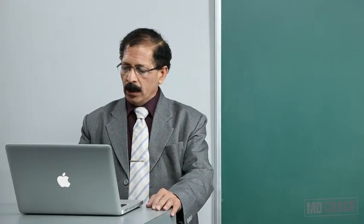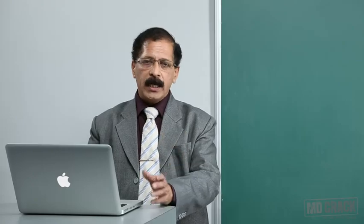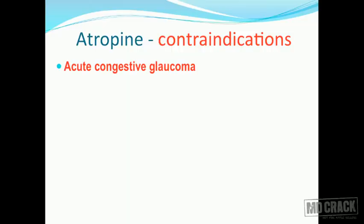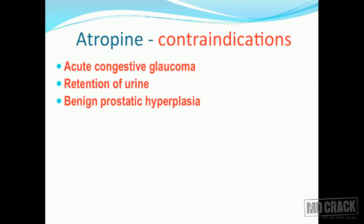After the therapeutic uses of atropine, we look at the contraindications. Since it increases intraocular pressure, it is contraindicated in acute congestive glaucoma. It is also contraindicated in patients with retention of urine, and you should remember benign prostatic hyperplasia, which is a condition associated with urinary retention. So we don't use it in patients with benign prostatic hyperplasia.